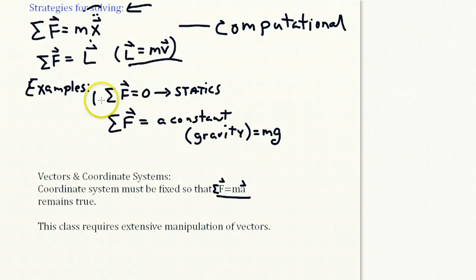So the first example here is statics, which I already mentioned, and you spent all last quarter doing. The second example is one we'll cover in detail, and that's when the sum of all the forces is equal to a constant. In a typical case, that constant is gravity, and it's equal to the mass times g, the acceleration due to gravity.